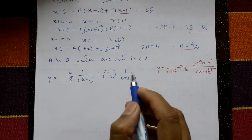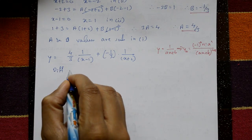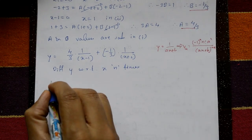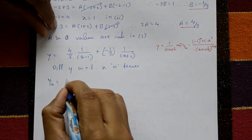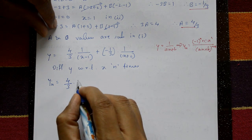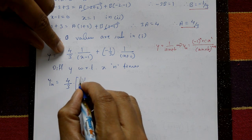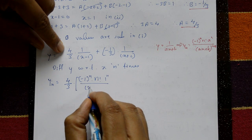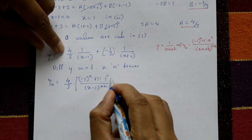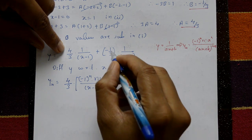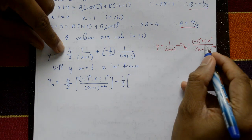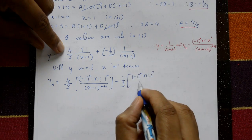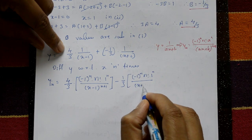Differentiating y with respect to x, n times: y_n = (4/3) · (-1)^n · n! · 1^n / (x-1)^(n+1) minus (1/3) · (-1)^n · n! · 1^n / (x+2)^(n+1). This is the required solution.